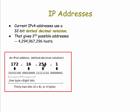IPv4 uses a 32-bit dotted decimal notation as shown here. These are decimals, and if you take their binary representation, it looks like this — 8 bits in each part, so that's four 8-bit bytes, or 32 total bits. That gives you 2 to the 32 possible IP addresses, which is enough to support more than 4 billion hosts.